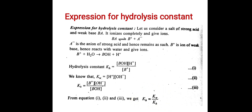In the previous lecture we obtained the relation KH equals KW upon KA, which was for the salts of weak acid and strong base, and we studied how to solve all three equations in that previous lecture. Therefore I am not going to repeat it here. Those who are new to this lecture, I suggest you watch the previous lecture to understand how the value of KH is obtained from equations 1, 2, and 3.